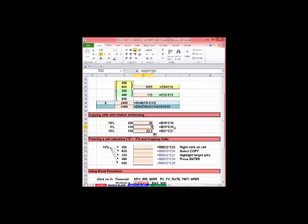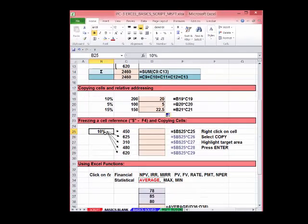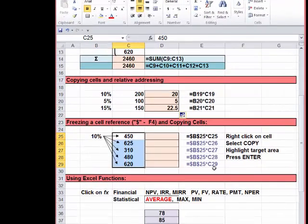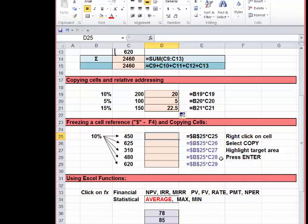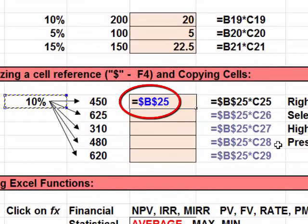Being able to enter a formula in a cell and copy it to other cells and have it adjusted for its new location is very powerful, but that's not always what you want. In this example, I want to take 10% of each of those numbers. We could enter the formula in each cell individually, but there's a better way. In the first cell up there, D25 equal, place your cursor on the 10%, B25, and press the F4 key. See the dollar signs that come around it?